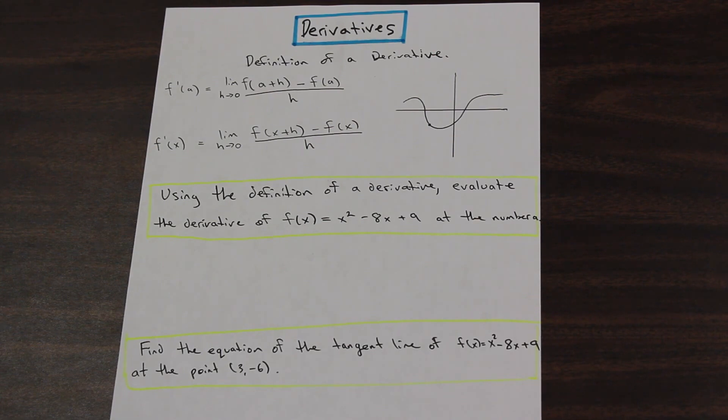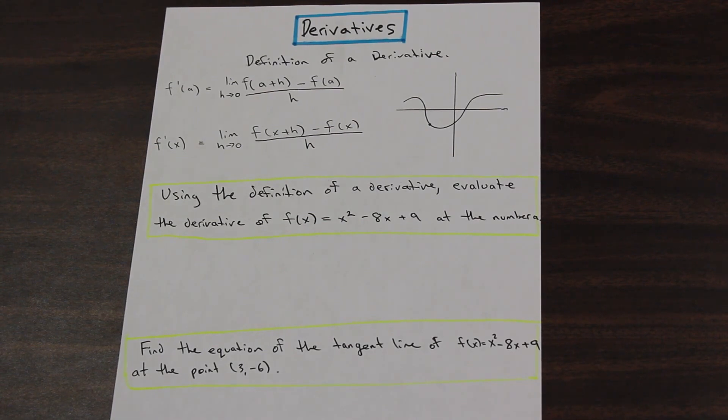Measuring the derivative of a function is measuring essentially its rate of change. You're measuring the slope of the tangent of that function. That's essentially what a derivative is.